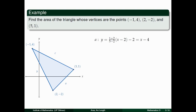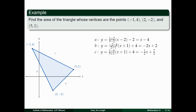We do the same for lines B and C. For line B, computing the slope and plugging in (-1, 4), we get y = -2x + 2. For line C, the slope is -1/2, and simplifying we get y = -½x + 7/2. Now that we have the equations of lines A, B, and C, we know which functions to use for setting up the definite integrals.